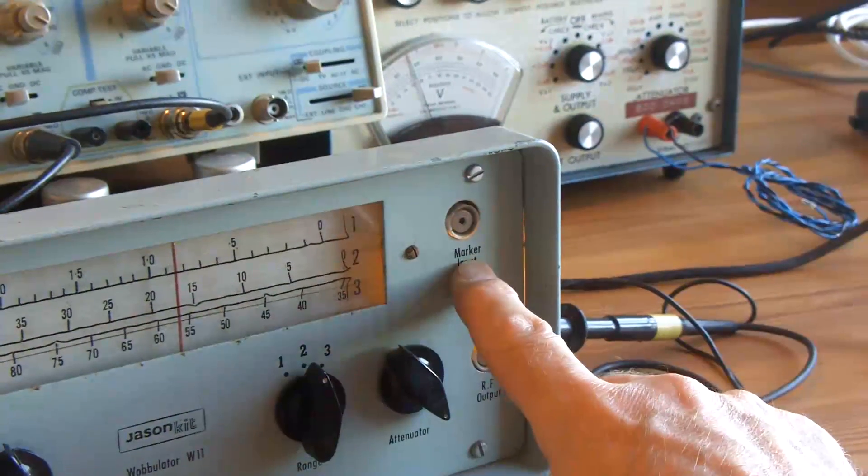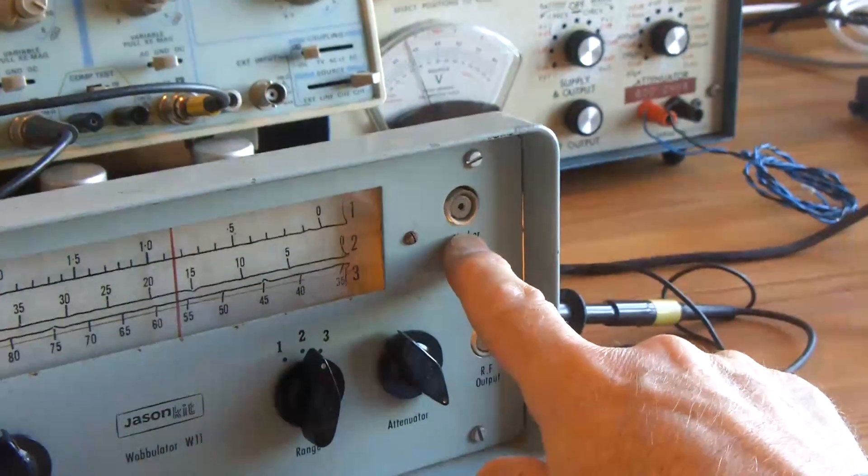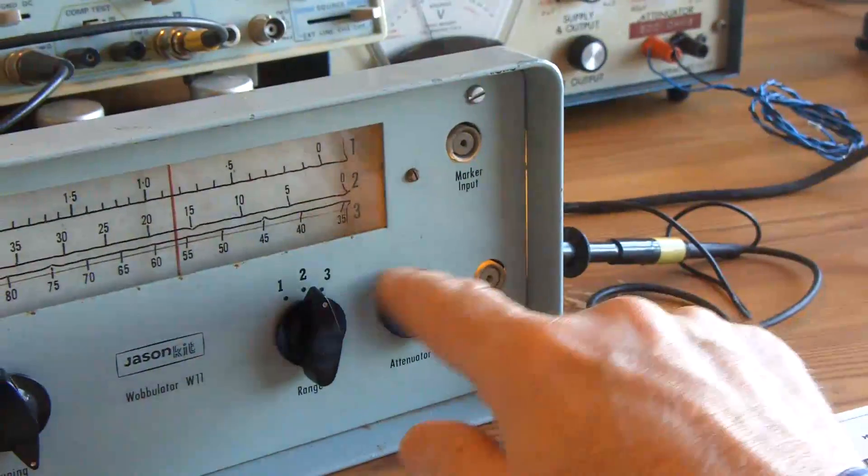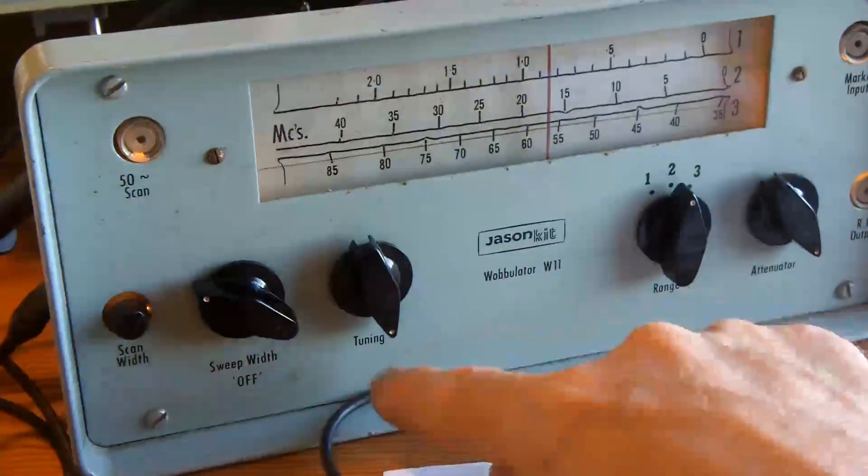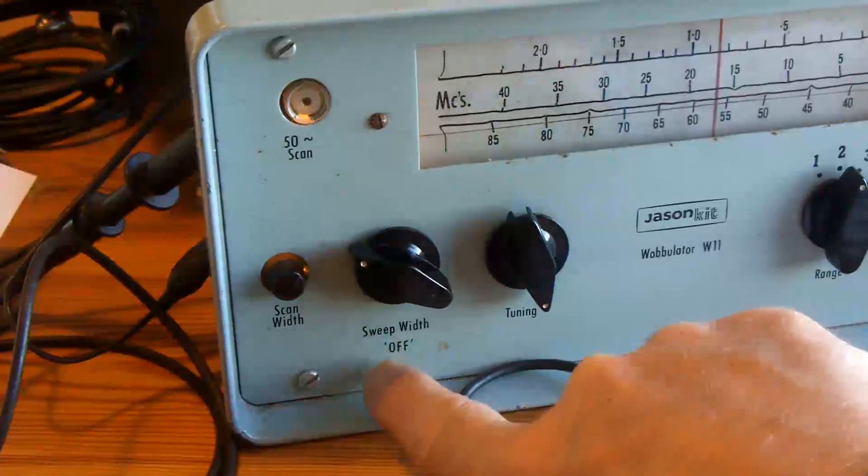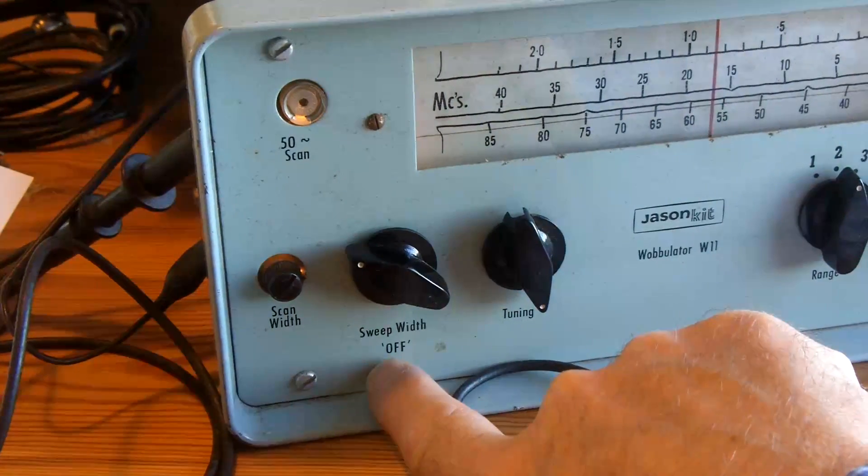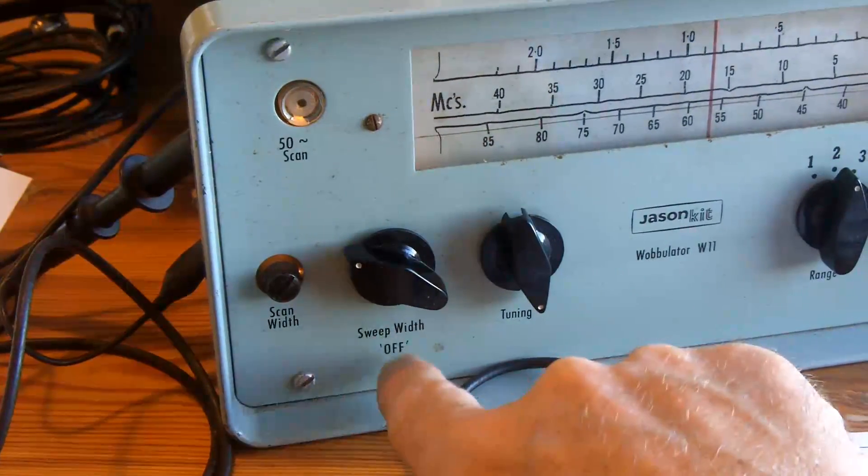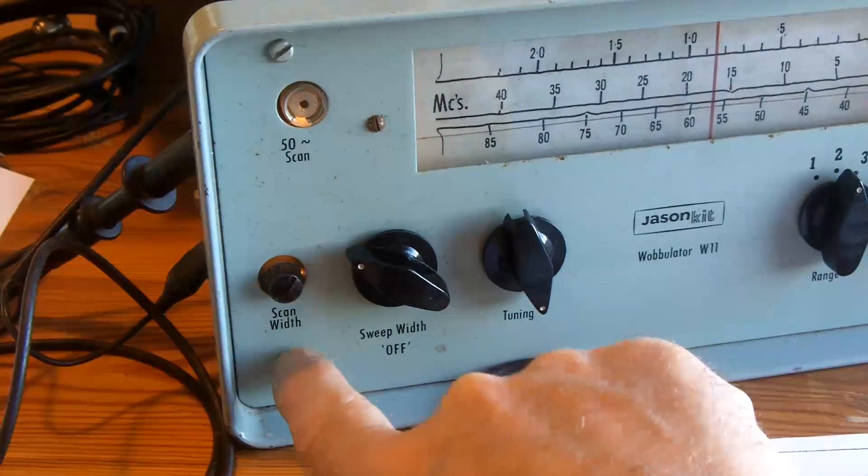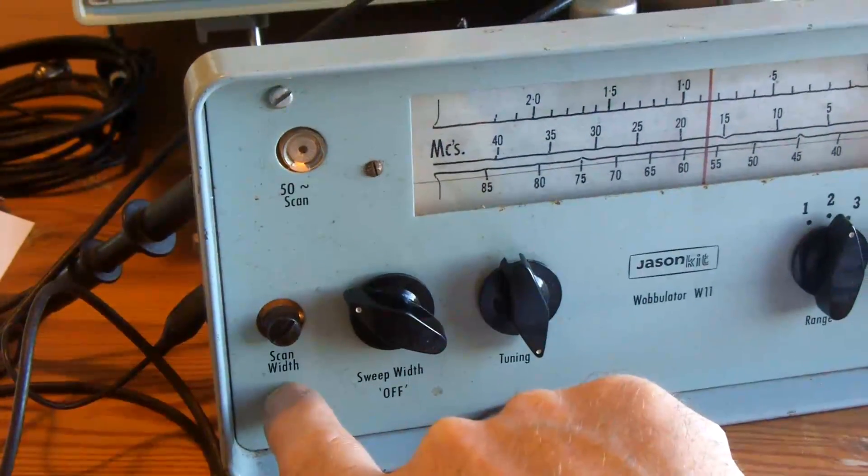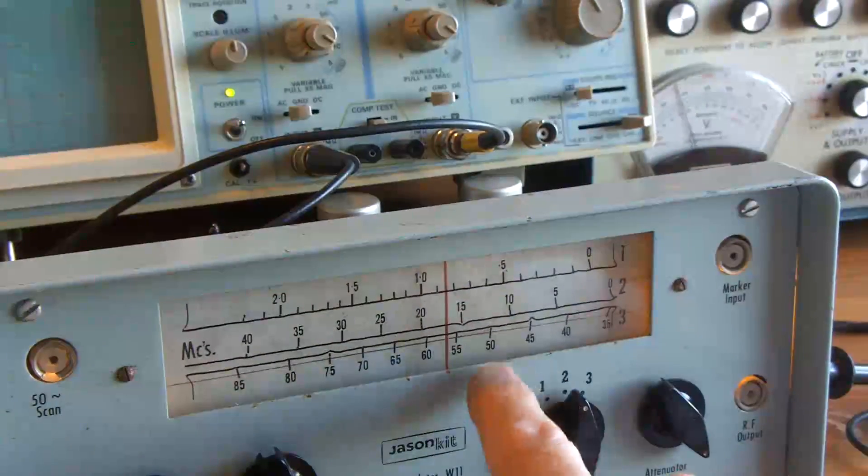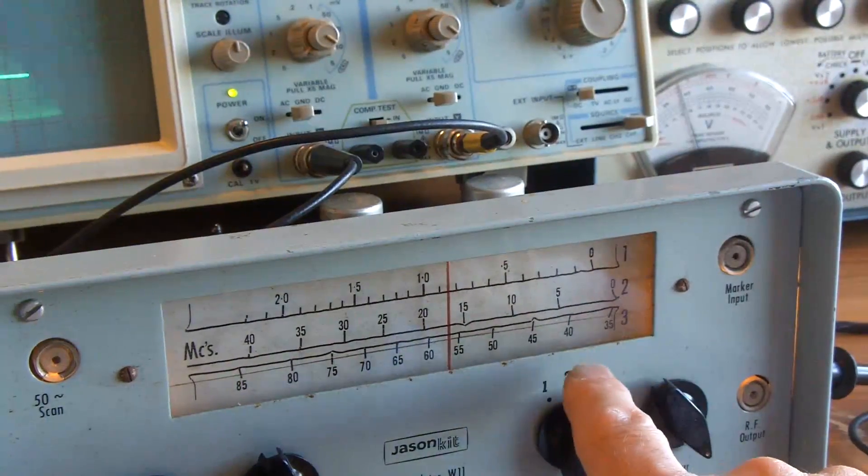This is a marker input, which I'm not doing anything with at the moment. So I've got attenuator, range, tuning and sweep width and the on-off switch. And this is the scan width. At the moment I've got the unit working on range 2.